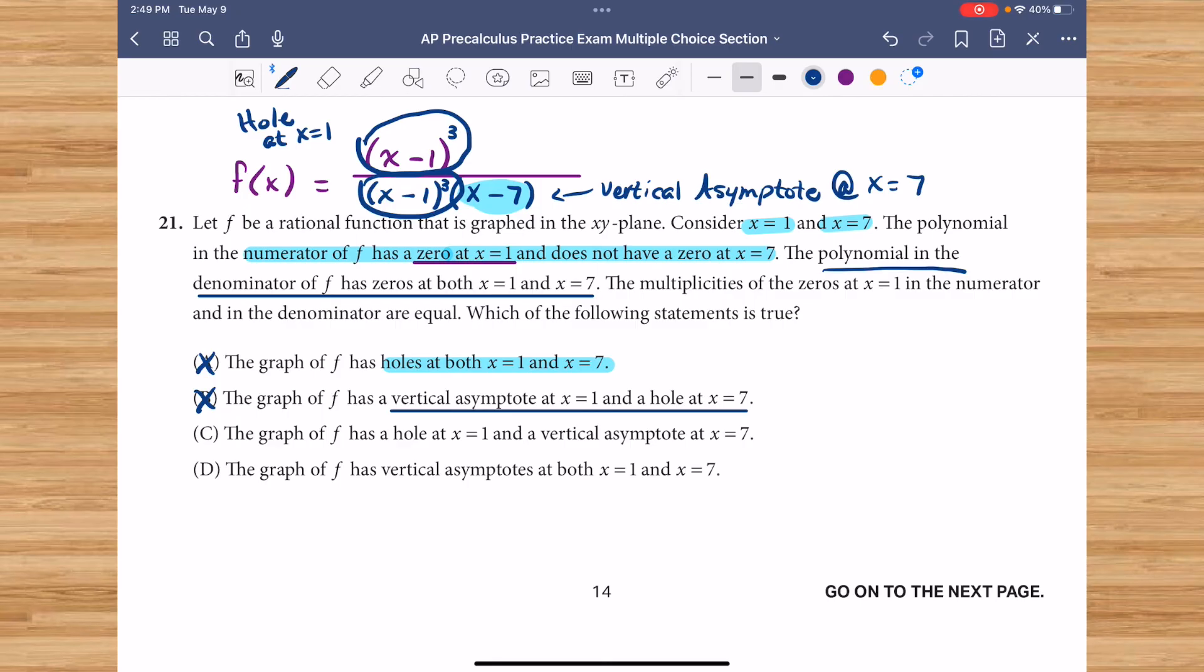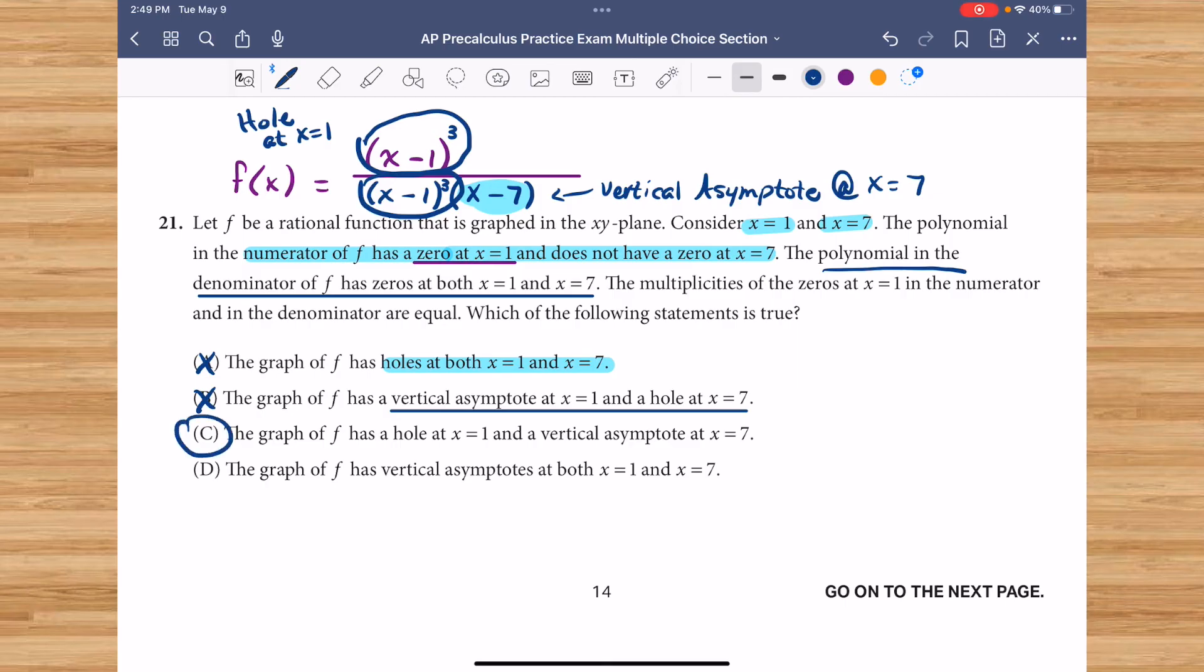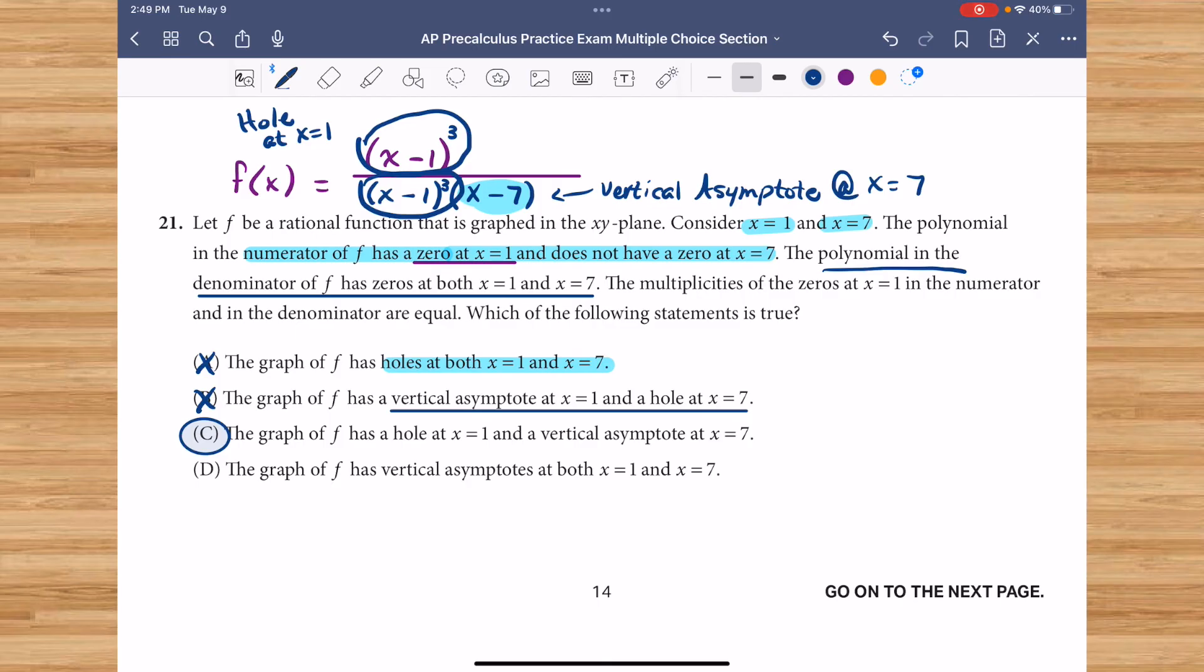C says graph of f has a hole at 1 and a vertical asymptote at x equals 7. That is a true statement. I'm going to circle that and just double-check D. The graph of f has a vertical asymptote at both 1 and 7. That is not true. 1 is a hole and 7 is a vertical asymptote. Our correct answer choice here is C.